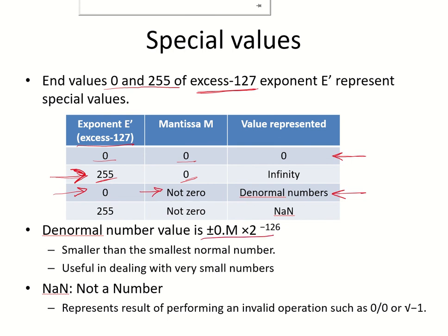This is how denormal numbers are represented or interpreted. Instead of 1.M, now there is a zero over here, so 0.M times 2 to the power of minus 126.